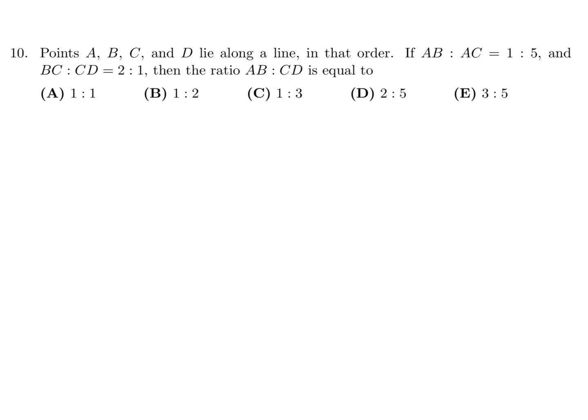Points A, B, C, D lie on a line in that order. AB to AC is 1 to 5, BC to CD is 2 to 1. What is the ratio AB to CD? Let's draw the line. AB is 1, let's call it x. AC is 5, so this would be 4x, because AB to AC is 1 to 5. If AB is x and AC is 5x, the x's cancel and you get 1 to 5. Now BC to CD is 2 to 1. BC is 4x.